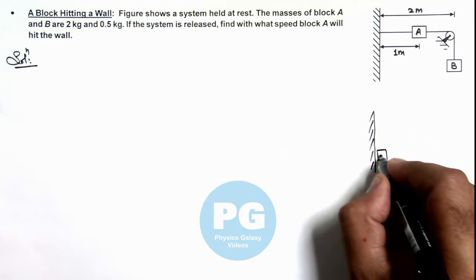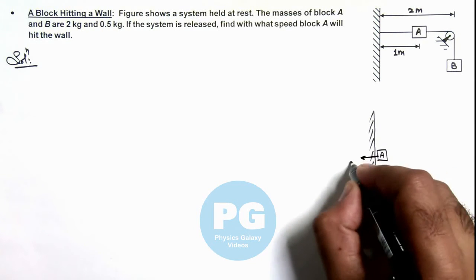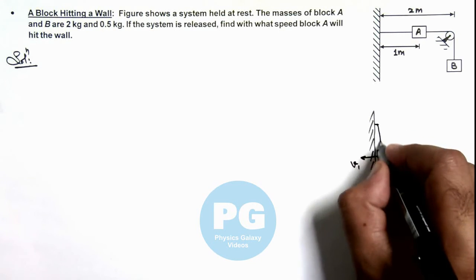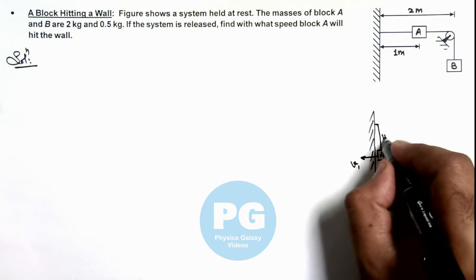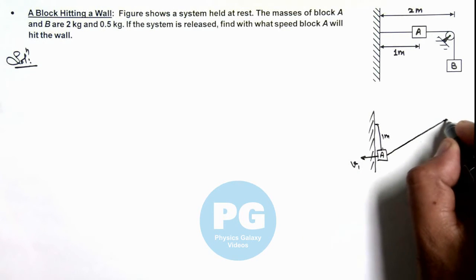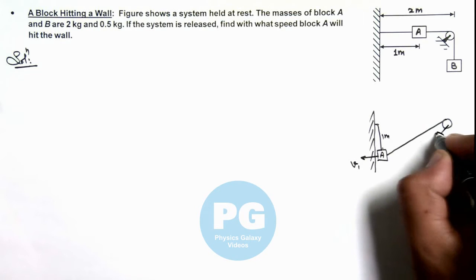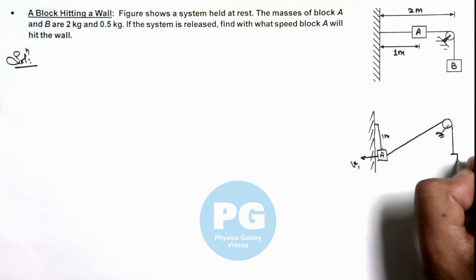When block A will hit the wall, say it is hitting with the speed v1, the string of 1 meter length will be vertical and the other string would be in this shape, where block B is hanging.